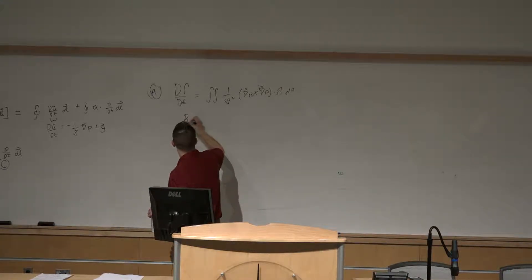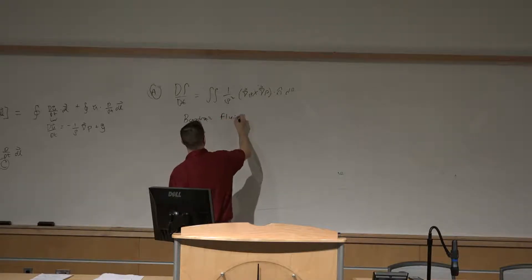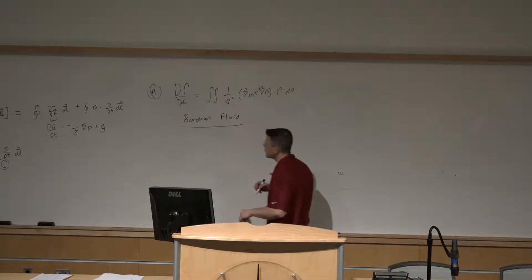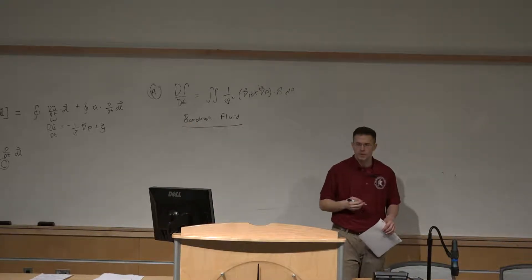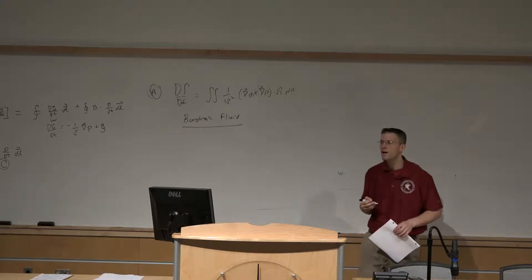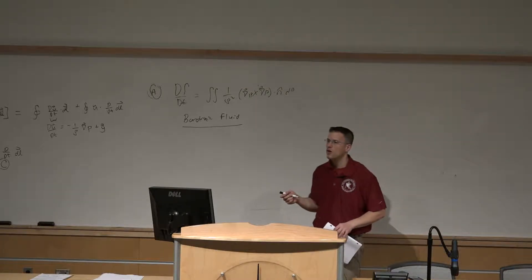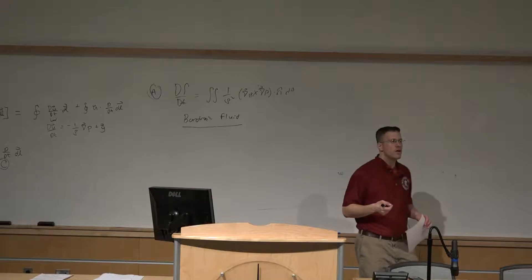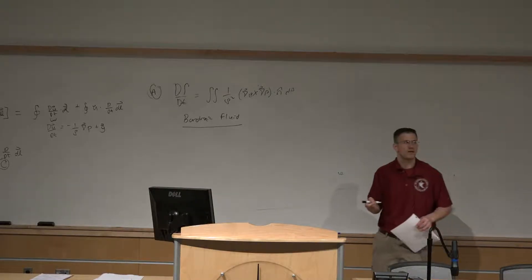For a barotropic fluid, what we mean is one where our lines of constant density — our contours of constant density — are parallel to our contours of constant pressure.